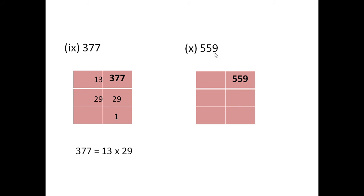The next number is 559. Again it is of the similar type. We have to start from the prime number 2 — but as this is not an even number, we cannot take 2 as the factor. Let us try for 3: add all the digits, 5 plus 5 is 10, 10 plus 9 is 19. 19 is not divisible by 3. Therefore, you cannot take 3 as a prime factor. Also, the number does not have 5 or 0 in the unit place, so it is not divisible by 5. If you divide by 7, you will find it is not divisible by 7. Then the next prime number is 11: 5 plus 9 is 14, 14 minus 5 is 9. 9 is not divisible by 11. Therefore, 559 is not divisible by 11.